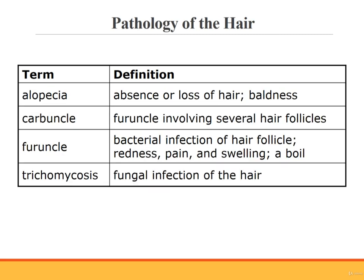This slide shows a photograph of varicella, or chicken pox — in this photograph, you can see that the rash is beginning to form scabs. Vitiligo is the disappearance of pigment from the skin in patches, causing a milky white appearance, also called leukoderma. Wet gangrene is an area of gangrene that has become secondarily infected by pus-producing bacteria. Now let's move on to pathology of the hair. Alopecia is the absence or loss of hair, especially on the head — it's commonly called baldness. The term itself does not tell the reason for the baldness; it may apply to men or to women. A carbuncle is a furuncle involving several hair follicles. A furuncle is a bacterial infection of a hair follicle characterized by redness, pain, and swelling — it's commonly called a boil.